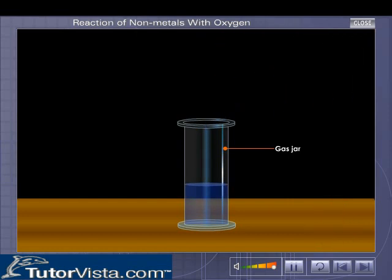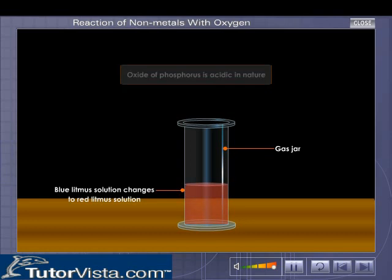The color of the litmus changes to red. It shows that the oxide of phosphorus is acidic in nature. This experiment proves that non-metallic oxides are acidic in nature.